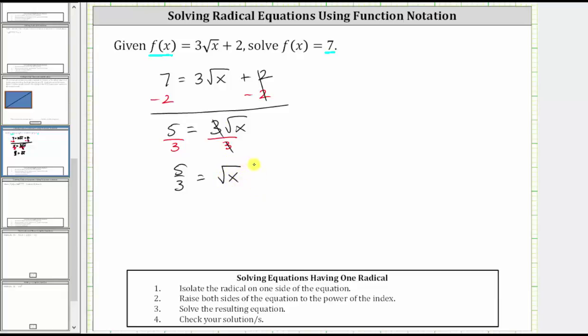Now that we've isolated the square root, the next step is to raise both sides of the equation to the power of the index, and because we have a square root, the index is two, and we square both sides of the equation.